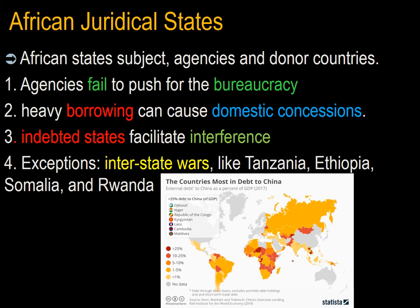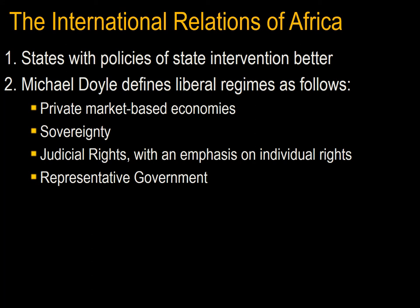There are a number of notable exceptions — like Tanzania, Ethiopia, Somalia, and Rwanda — which have all managed wars with sufficiently effective bureaucracies to support the effort. Now that we understand the situation of the African state as a juridical state, we can proceed with the international relations of Africa.